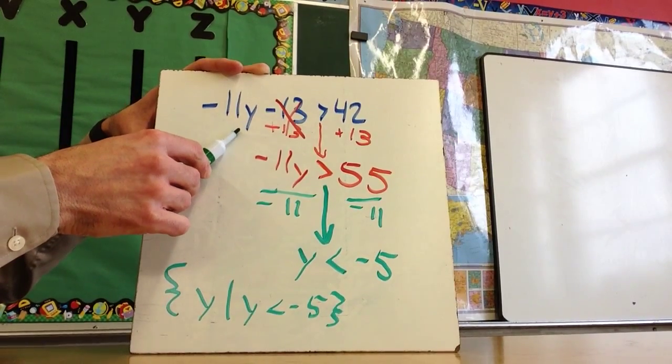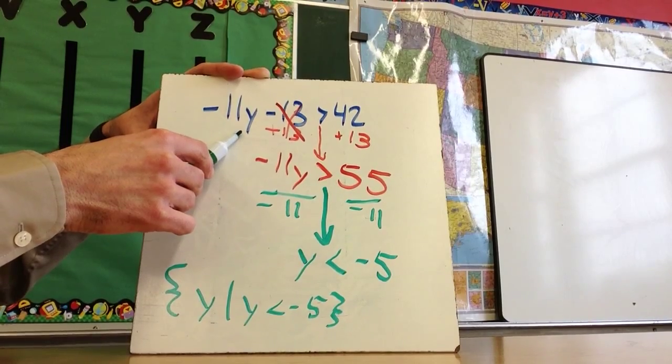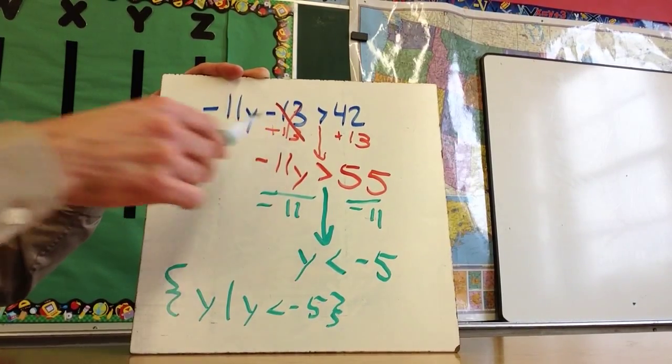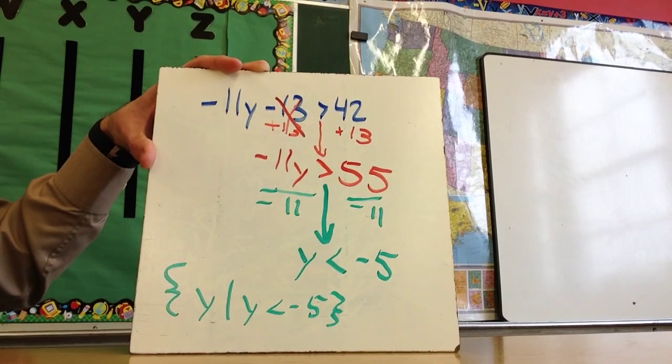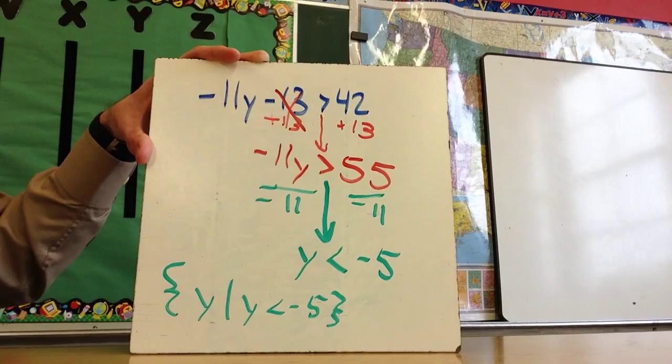You put that in here. Let's just say -6. I get 66 minus 13. 66 minus 13 is positive 50. 50 is greater than 42. So that checks out.